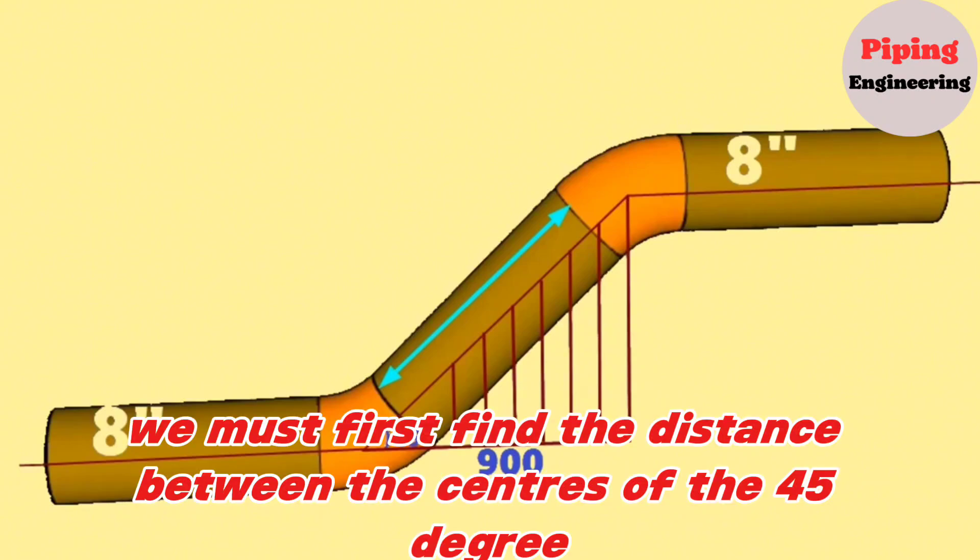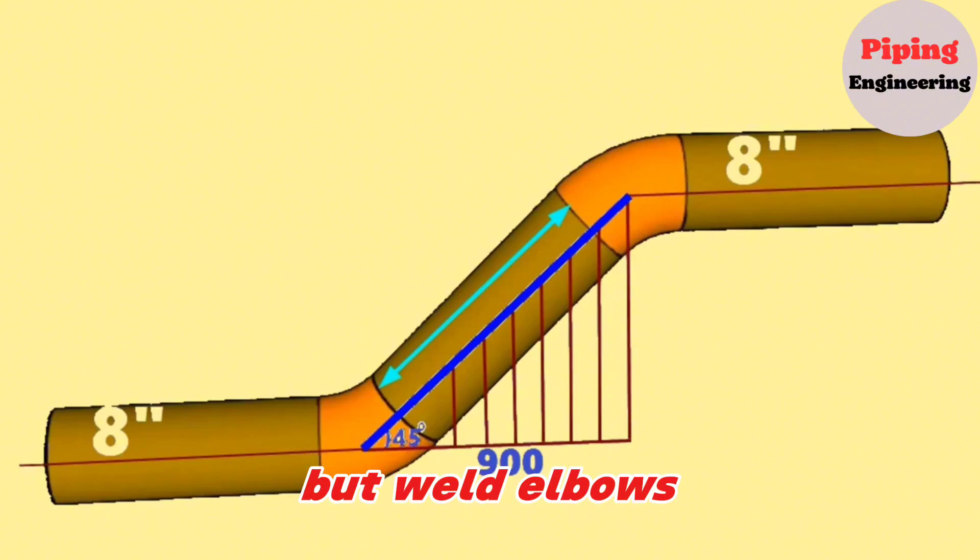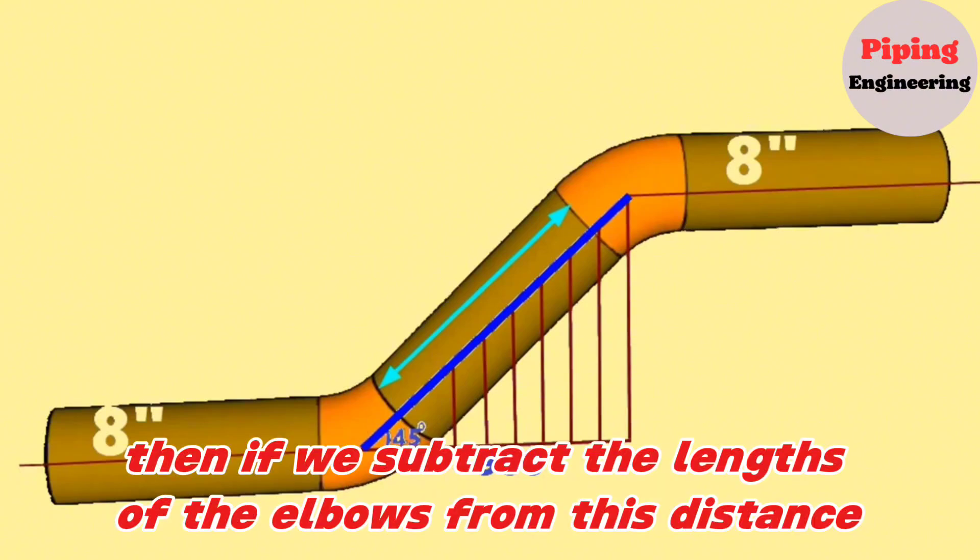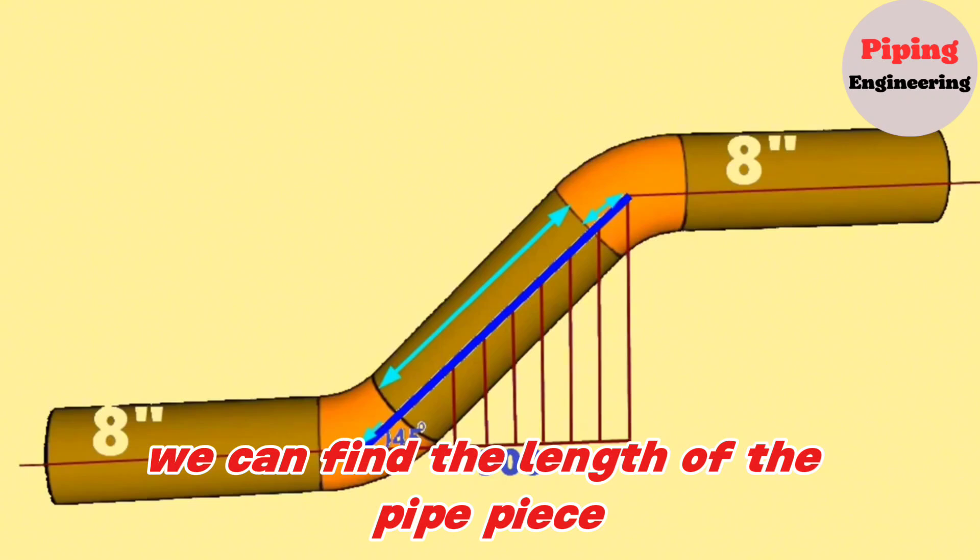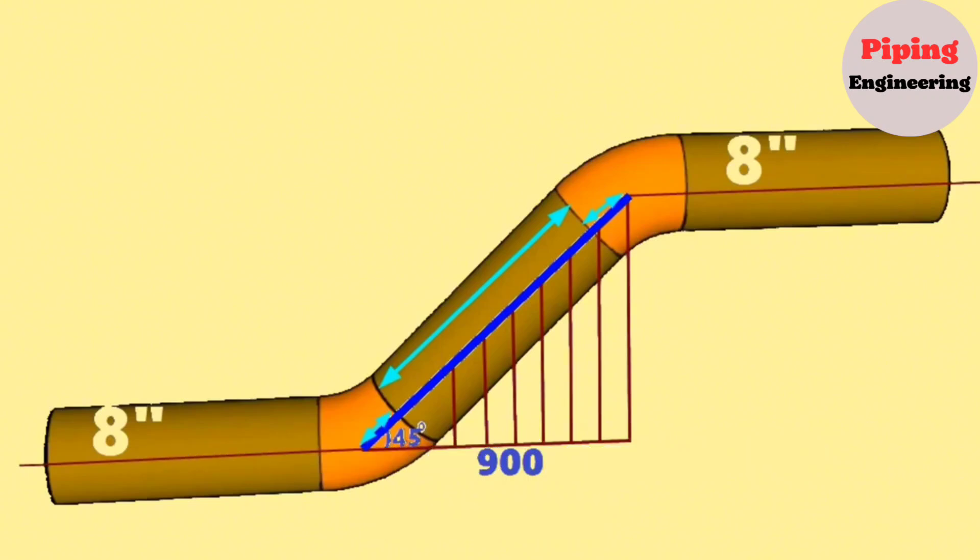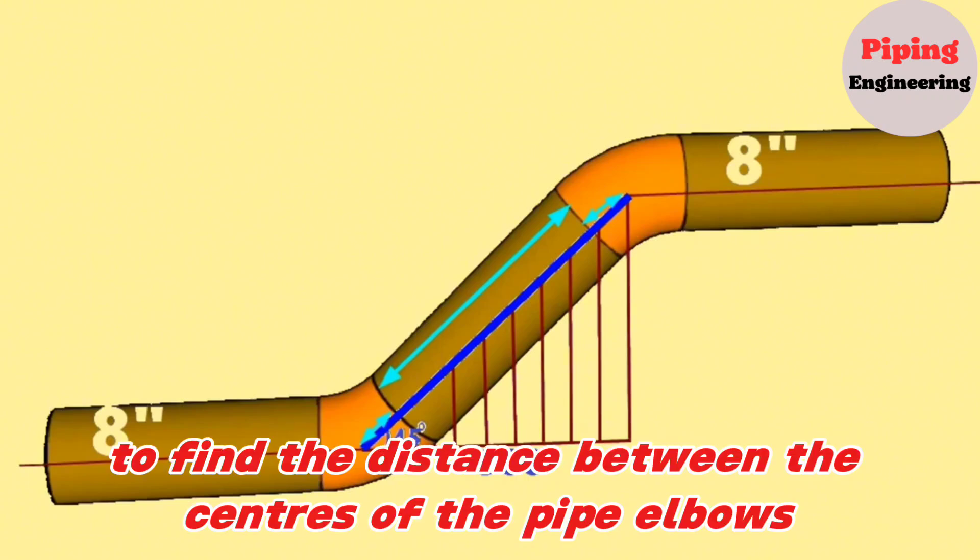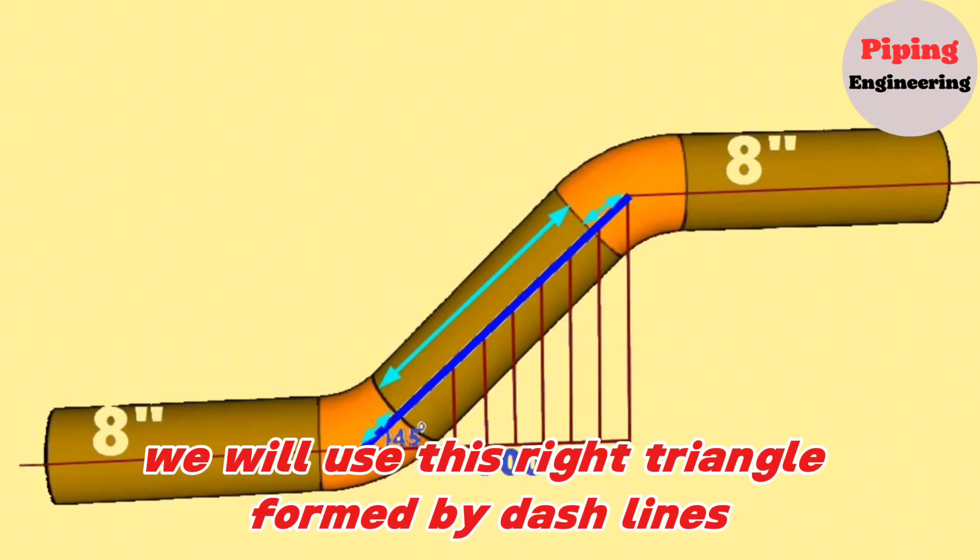For this, we must first find the distance between the centers of the 45-degree butt weld elbows. Then, if we subtract the lengths of the elbows from this distance, we can find the length of the pipe piece. To find the distance between the centers of the pipe elbows, we will use this right triangle formed by dashed lines.